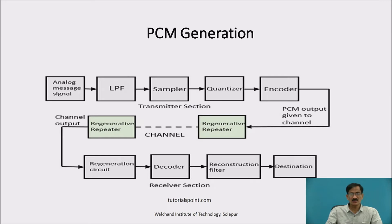This is the PCM generation: an analog message signal is given to a low pass filter, then a sampler that samples the analog signal at a particular sampling frequency using the Nyquist criteria, then a quantizer, encoder, and a channel. At the receiver, there is a regeneration circuit, decoder, reconstruction filter, and destination.